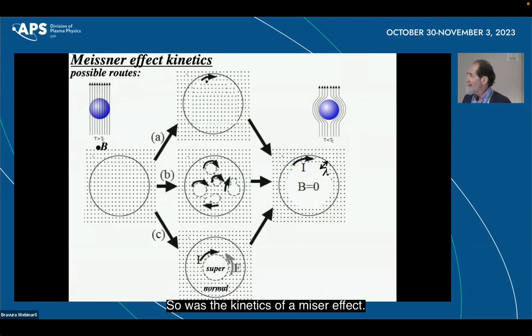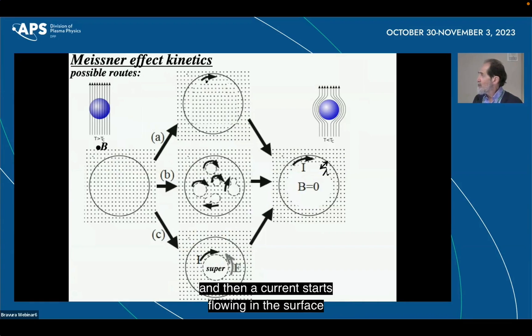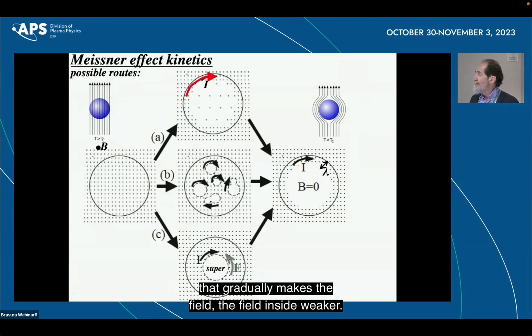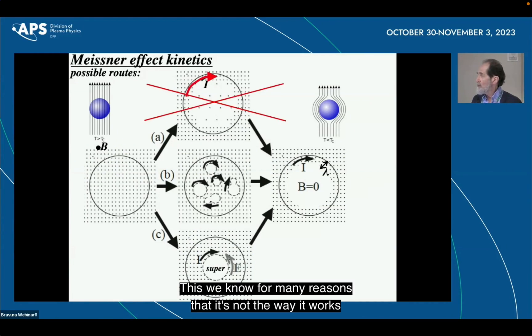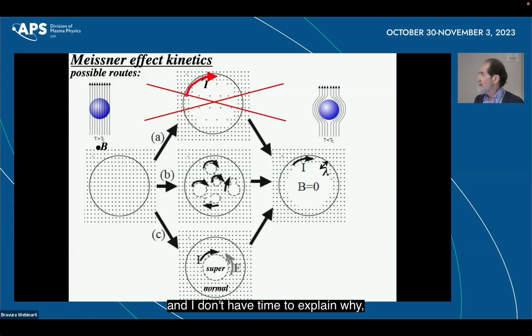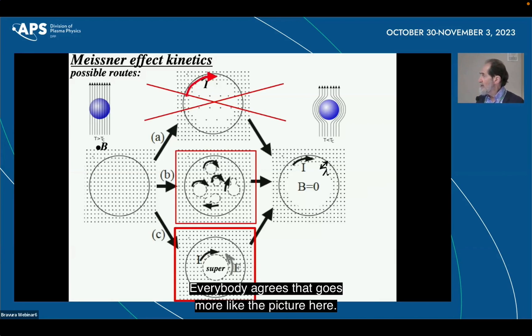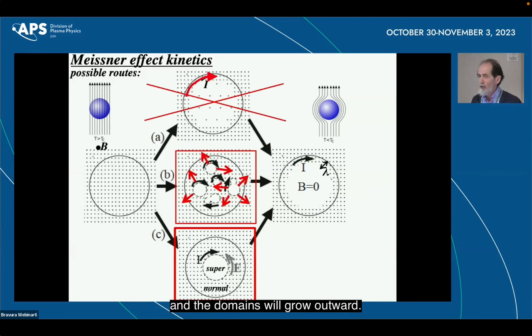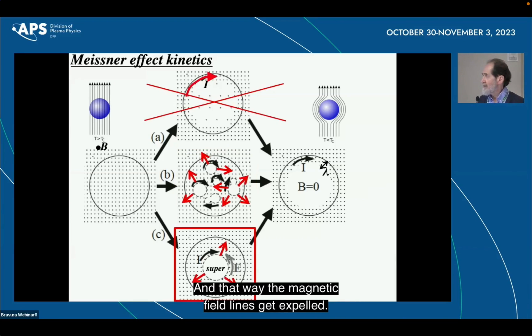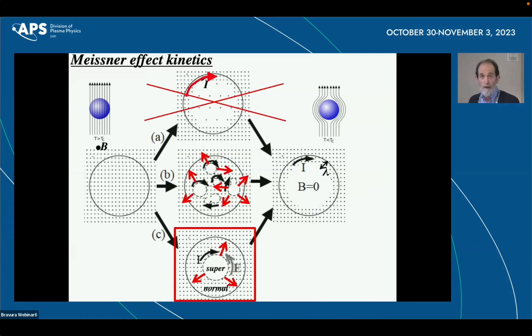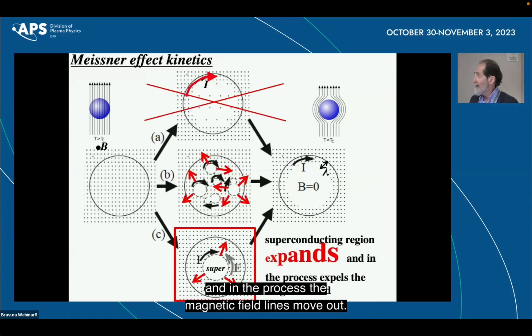So what's the kinetics of the Meissner effect? We could think that we start with a metal in a magnetic field, and then a current starts flowing in the surface that gradually makes the field inside weaker. This we know for many reasons that it's not the way it works. And I don't have time to explain why, but we know that's not the way it works. Everybody agrees that it goes more like the picture here. You start to develop domains that are superconducting and the domains will grow outward. And that way, the magnetic field lines get expelled. And in the simplest version, we just have one single domain in the center that expands. And in the process, the magnetic field lines move out.